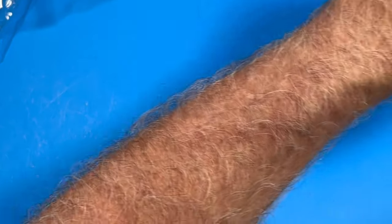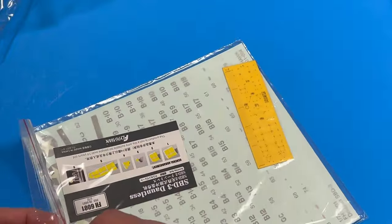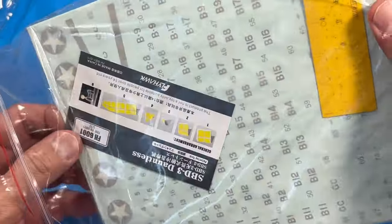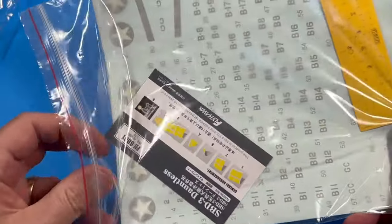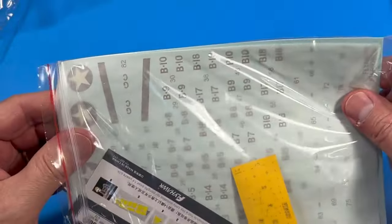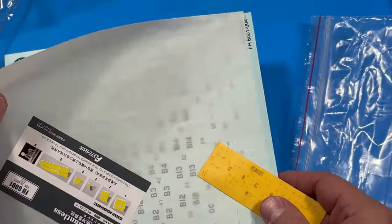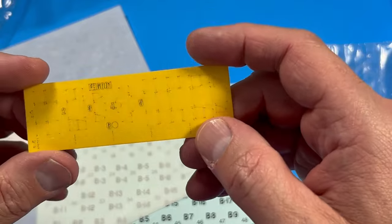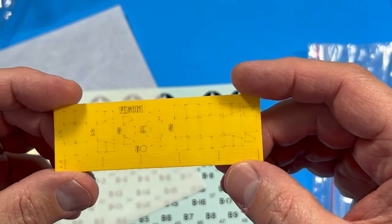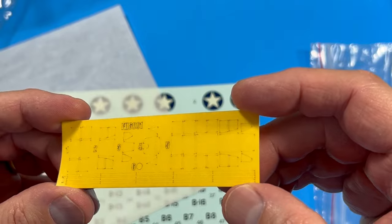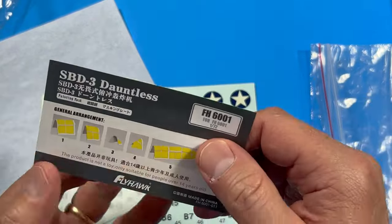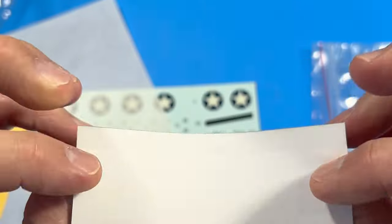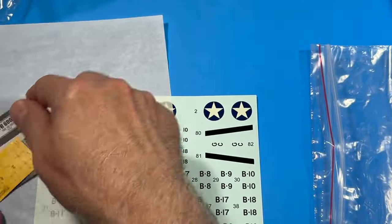So, now let's take a look at the decals. Again, paint mask for the windscreen and canopy. That is nice. Really cool. Thank you, Flyhawk, for doing that. Because there's a lot of frames. And especially at this scale. Yikes, if you had to do that by hand cutting.